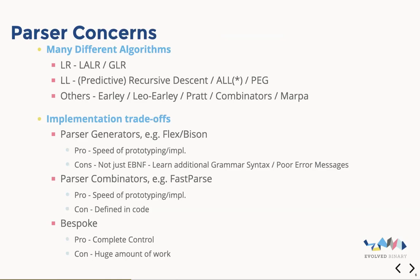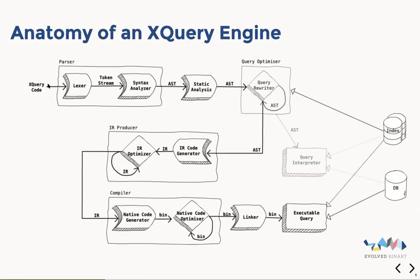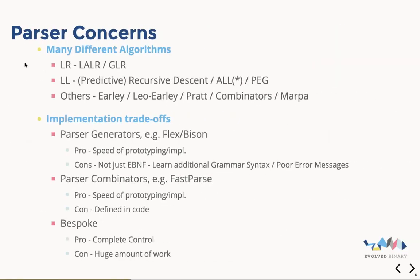So what we want to do is create a new XQuery engine for FusionDB. We looked at some of the requirements that we have. Based on our anatomy, the first thing we need to think about is the parser. With parsers there are lots of different options out there, and they predominantly fall into three categories: LR or LL, and then a few others that offer different interesting algorithms.